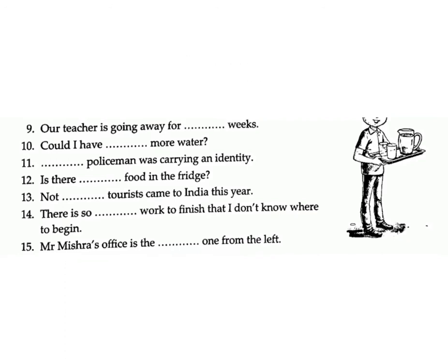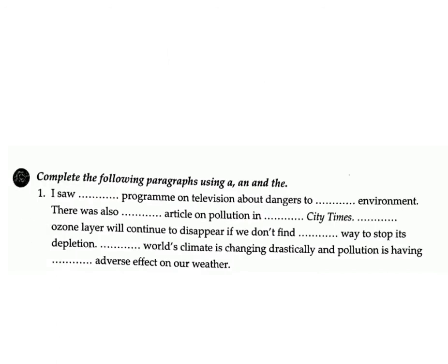(15) 'Mr. Missero's office is the third one from the left.' — Answer: third. Exercise C: Complete the following paragraphs using a, an, and the.